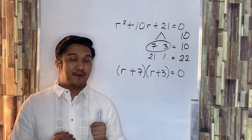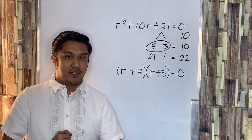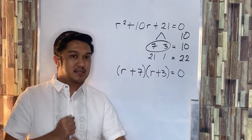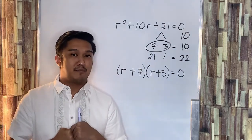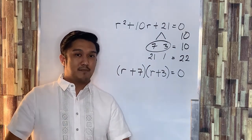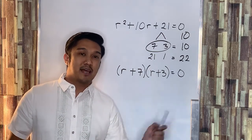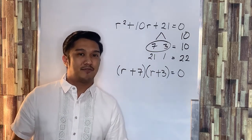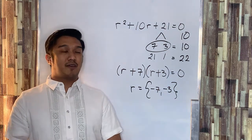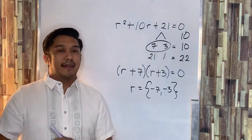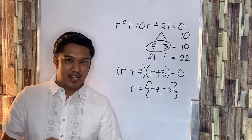Now, let's have the factored form of the quadratic equation, which is the product of the binomials: r plus 7 times r plus 3, equal to zero. Therefore, the solution set of the equation is r is equal to negative 7 and negative 3.